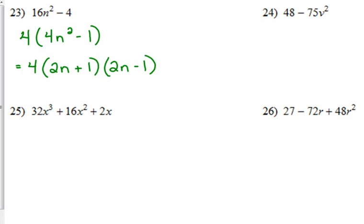Now, 24 is an example of one that is not the difference of perfect squares from the get-go. It looks like it should be because it's a binomial. You're missing the linear term. There's a minus sign in between. But 48 and 75 are not perfect squares. However, they have a GCF of 3. And if we take out that GCF of 3, what we are left with are perfect squares.